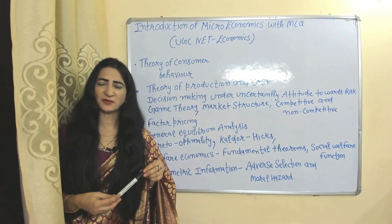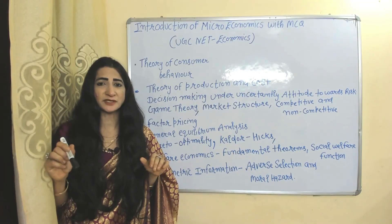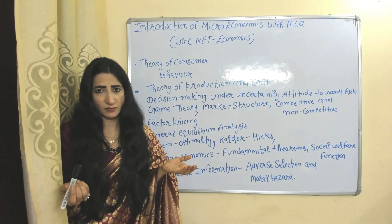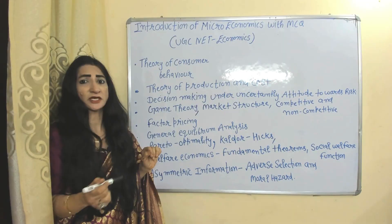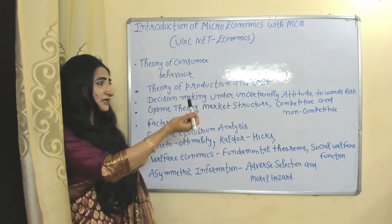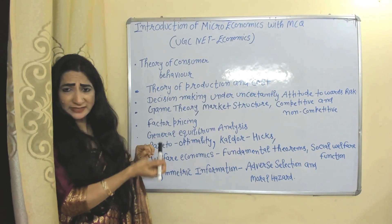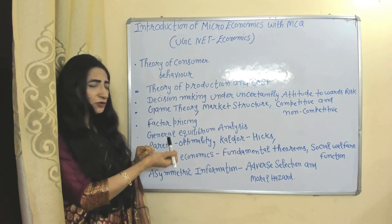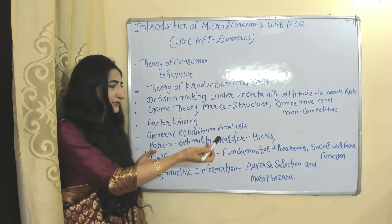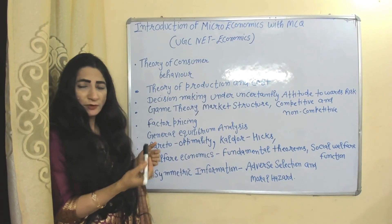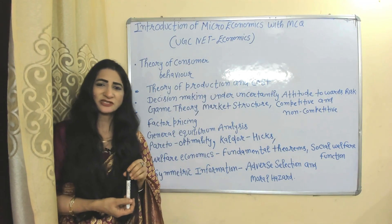Hello everyone, my name is Minis. I hope you all are staying healthy. Today we are going to talk about an introduction to microeconomics with MCQs, especially for UGC NET Economics. We will cover important topics: theory of consumer behavior, theory of production cost, decision making and uncertainty, game theory, market structure, competitive and non-competitive markets, factor pricing, general equilibrium analysis, Pareto optimality, Kaldor-Hicks compensation criterion in welfare economics, fundamental theorems, social welfare function, and consequences of asymmetric information like adverse selection and moral hazard.